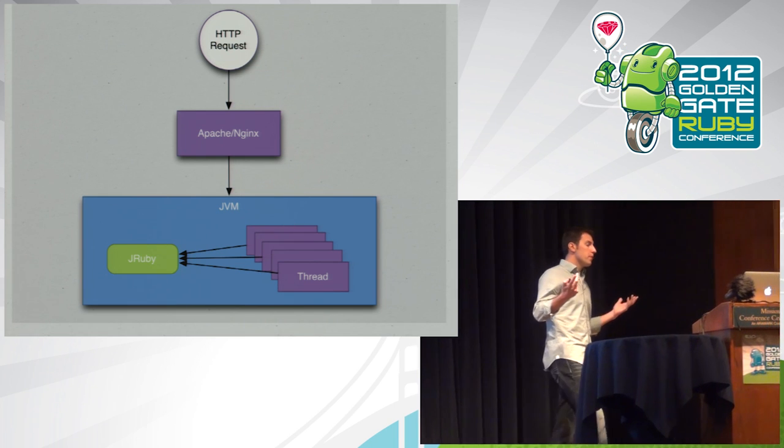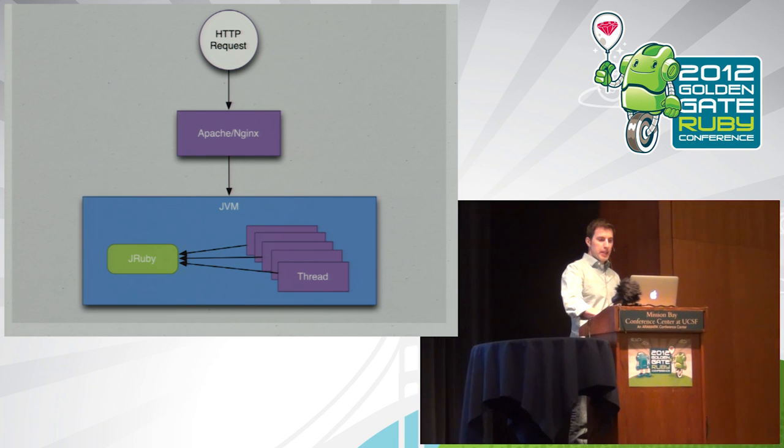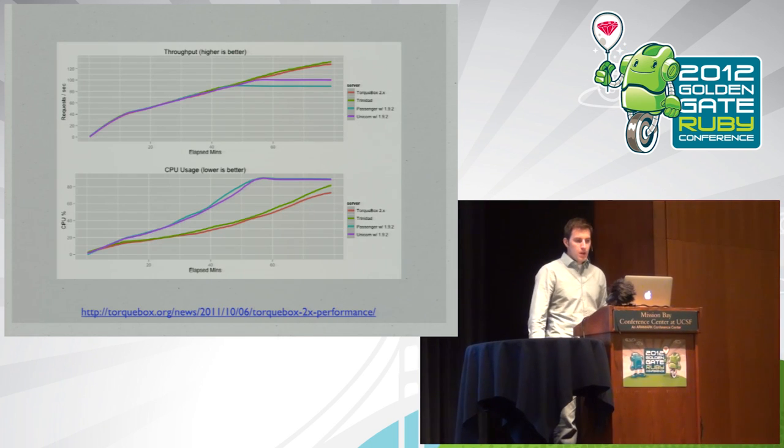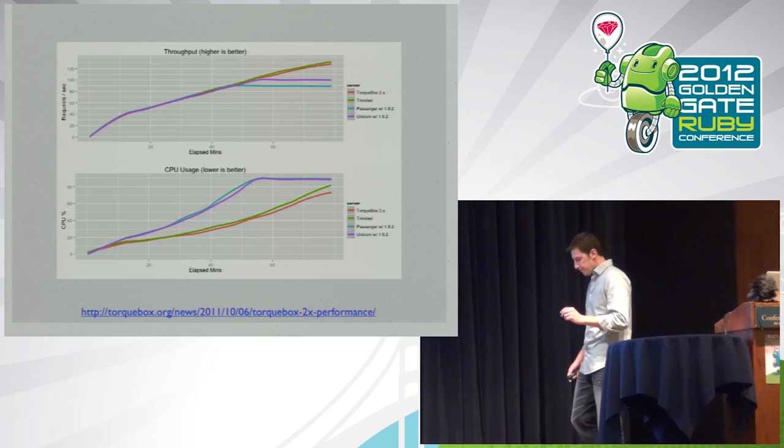This also solves every one of the problems I just described in the previous architecture. Memory growth is not an issue because we only have one application instance. We don't have to balance these threads. When they get stuck, it's not a big deal. We don't have to replicate session state because they're already sharing memory, and there's only one database connection pool. So my argument is that this architecture is more scalable and more reliable. But is it more performant? Well, that's why I brought data. The Torquebox team has done extensive testing.